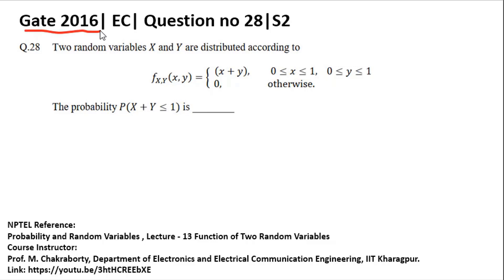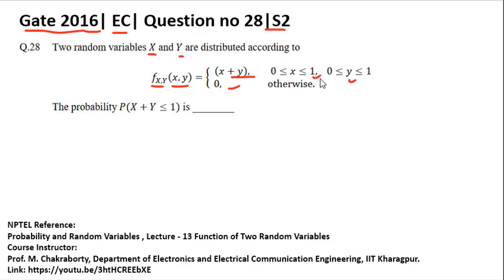This question was asked in the 2016 Electronics and Communication exam, paper set 2. You are given two random variables x and y with a joint distribution f(x,y) = x + y, where x is in [0,1] and y is in [0,1], and f(x,y) = 0 otherwise. You need to find the probability that x + y ≤ 1.